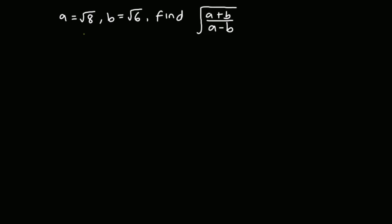In this video we have to evaluate the square root of (a + b) all over (a − b), given that a is equal to the square root of 8 and b is equal to the square root of 6.